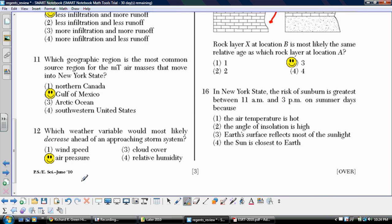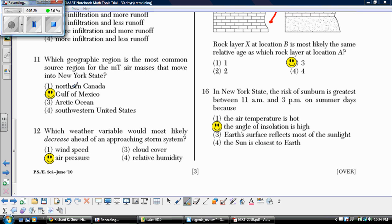Last one on this page. We've got New York State. The risk of sunburn is greatest between 11 and 3 p.m. on summer days because, between those times of the day, we generally expect the sun to be higher in the sky. And therefore the angle of insolation would be high, giving us focused beams of light. And there we go. Page two done. Save this one. Move on to page three.